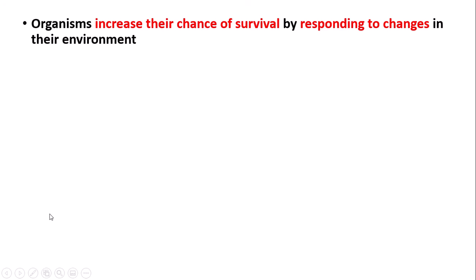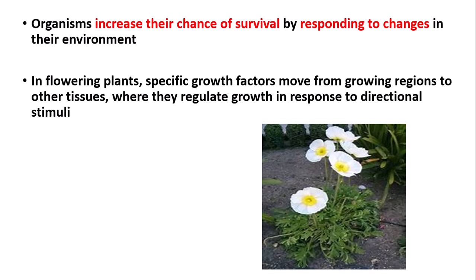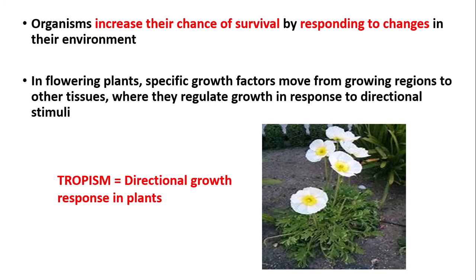All living organisms can increase their chance of survival by responding to changes in their environment. For example, in flowering plants, specific growth factors move from growing regions to other tissues where they regulate growth in response to directional stimuli. Directional stimuli can be light or gravity. For this first part of the video we are going to focus on a particular response called tropism, which is a directional growth response in plants. There are two types of tropism you need to know for AQA A Level Biology.